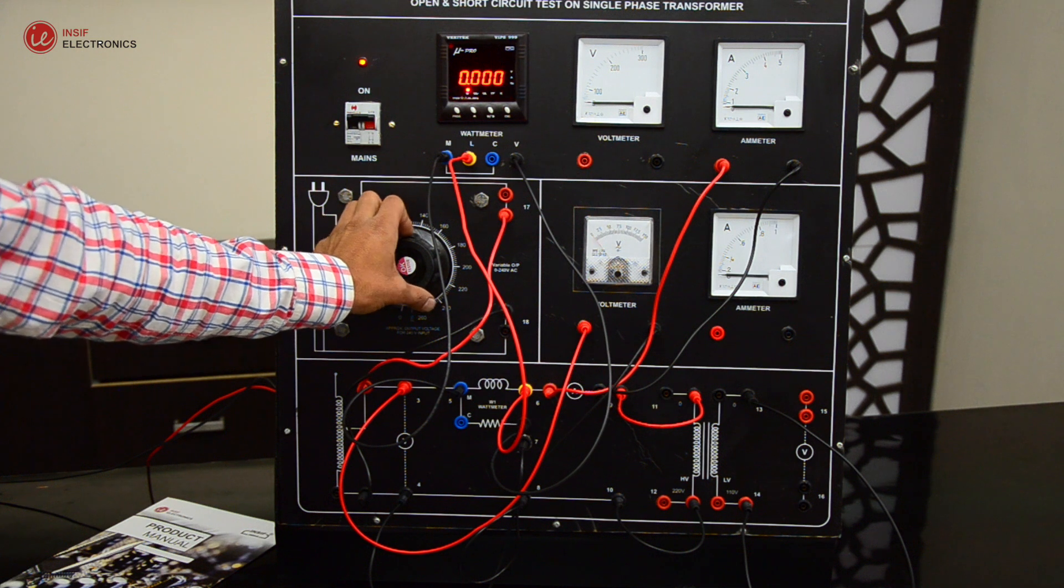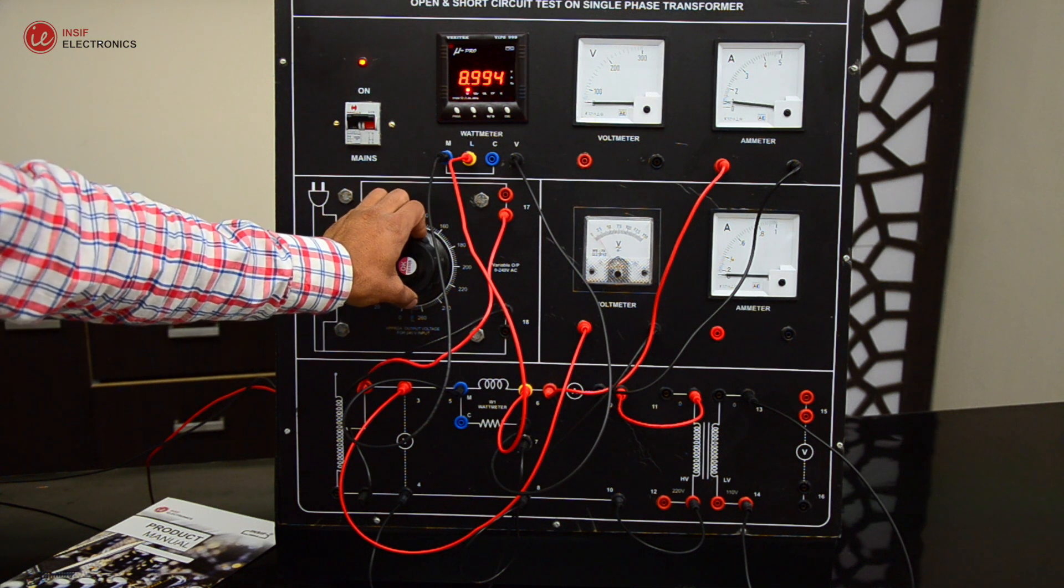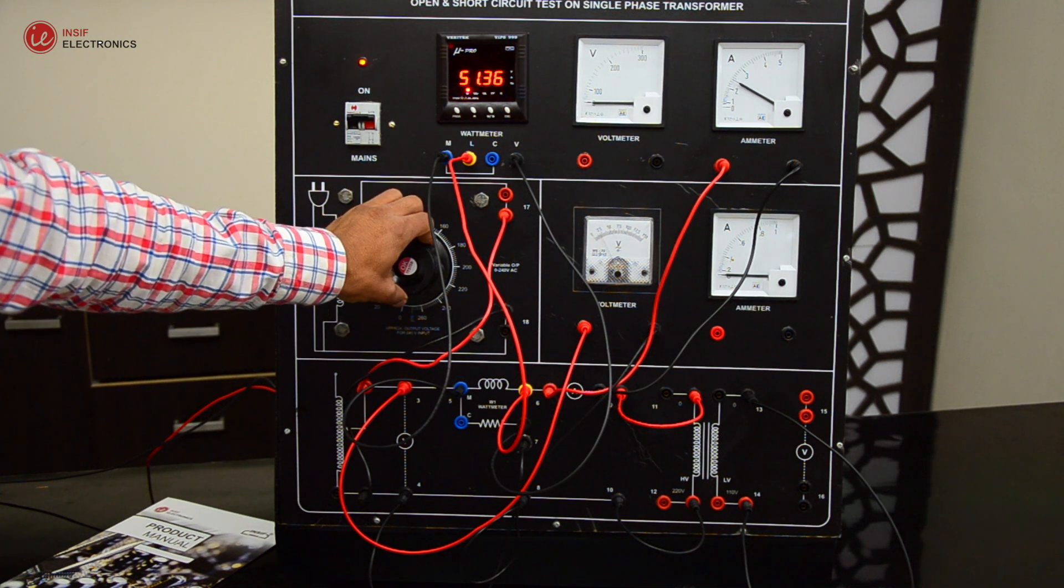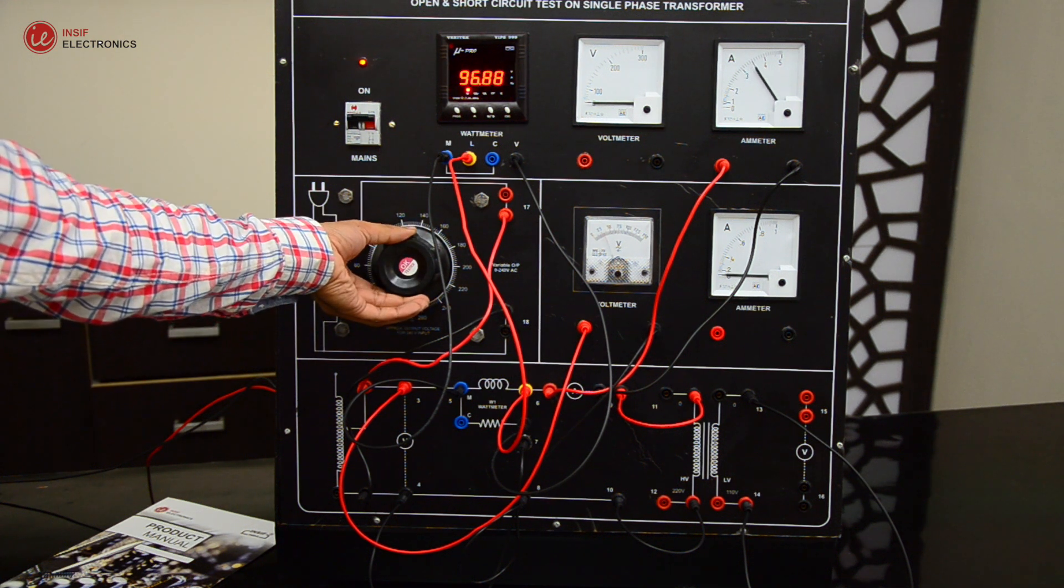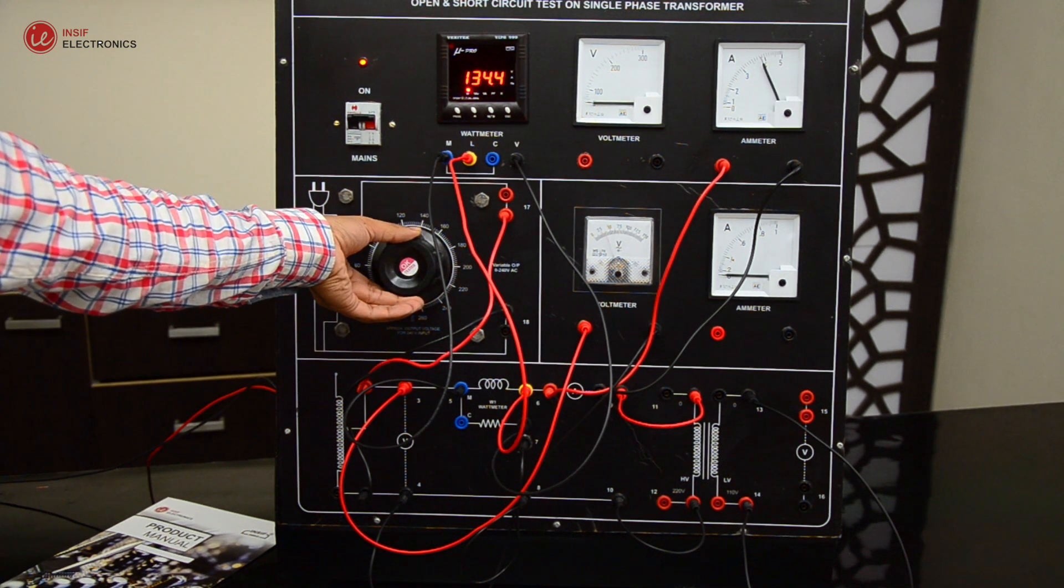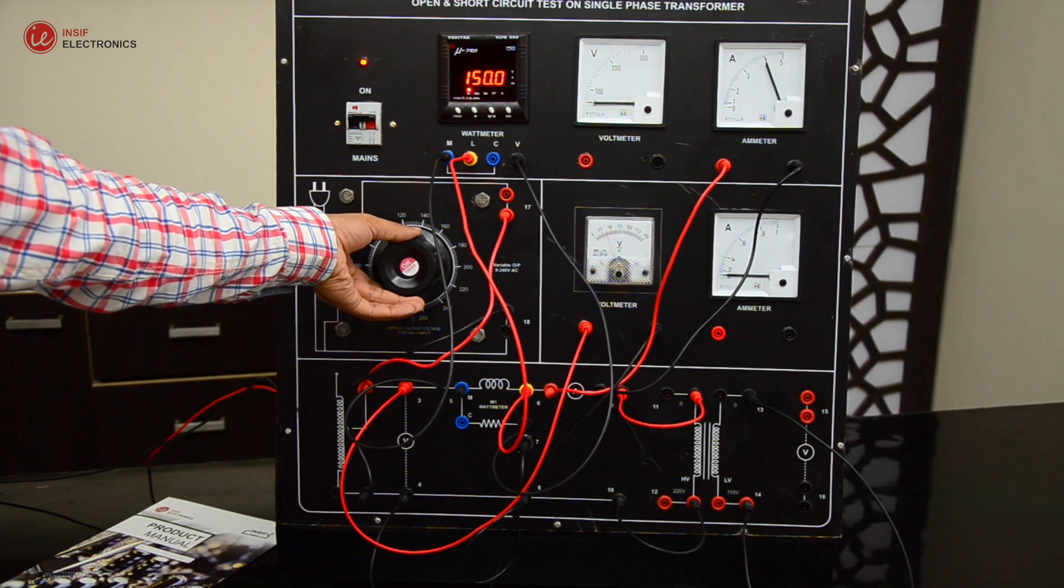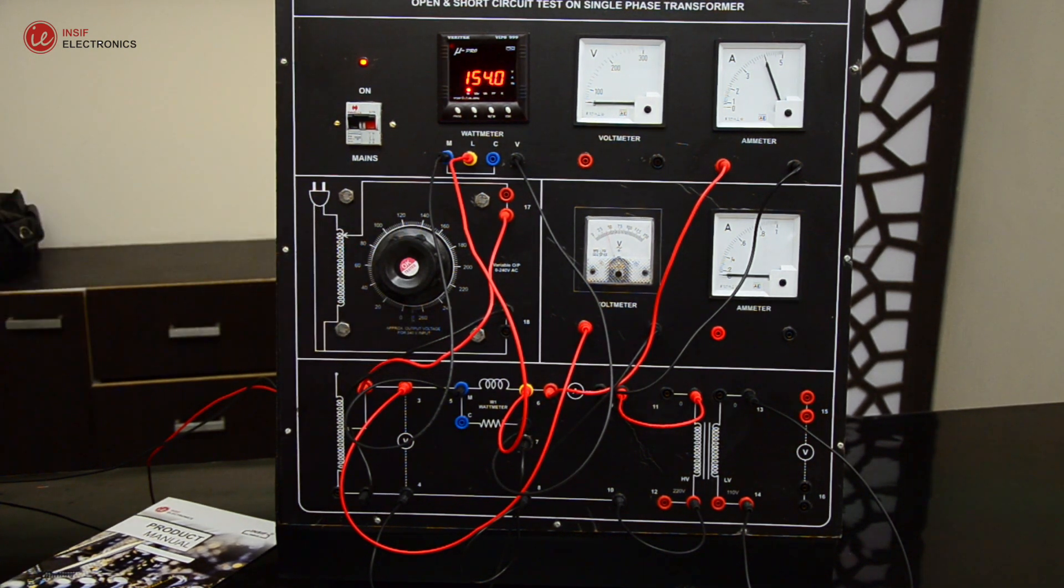Increase the input voltage very carefully and slowly so that the current in secondary winding reaches rated value 4A. Measure the primary voltage, primary current, primary circuit and watt meter reading of transformer.